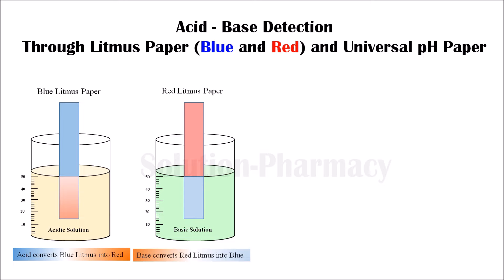If we want to know the approximate pH value of our solution, then for this we require another type of paper called universal pH paper, along with the universal pH scale. Universal pH test paper is a qualitative pH test strip that gives us the approximate pH value of a solution.